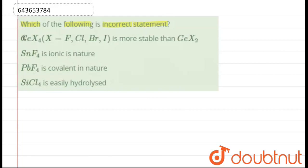The first statement is saying GeX4, where X should be fluorine, chlorine, bromine or iodine, so GeX4 is more stable than GeX2. Second is saying that SnF4 is ionic in nature, then PbF4 is covalent in nature and SiCl4 is easily hydrolyzed. So we have four statements and we have to say which of the following is incorrect one.